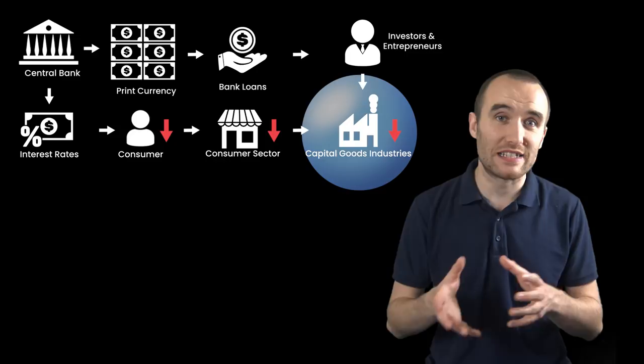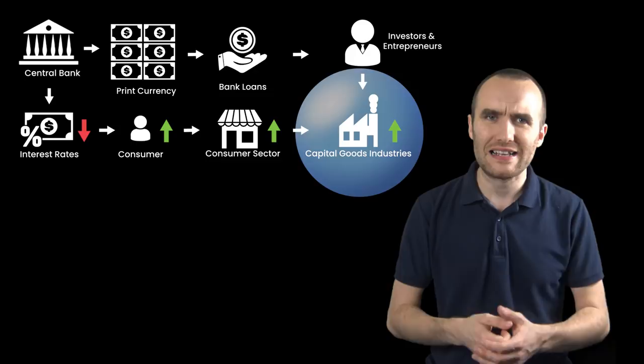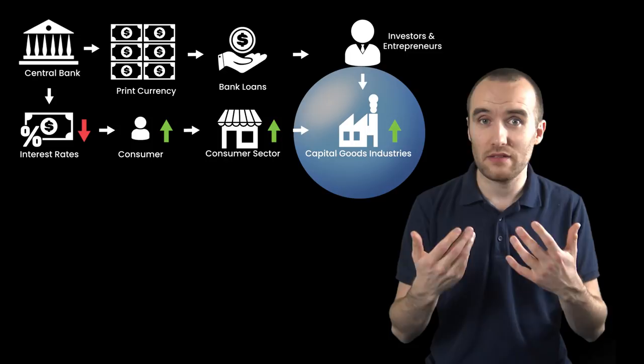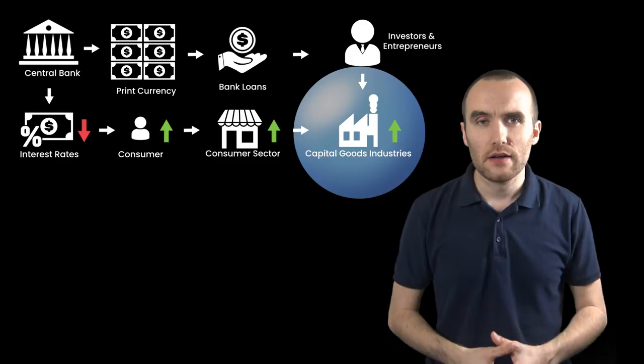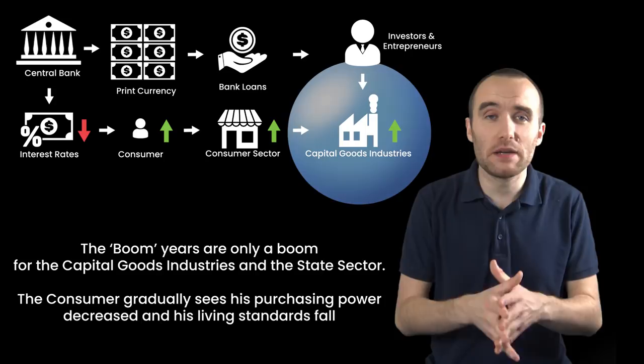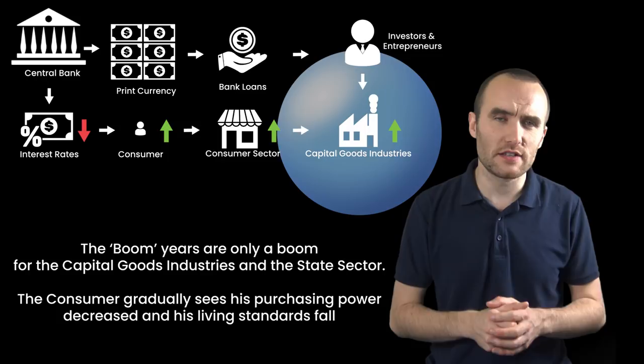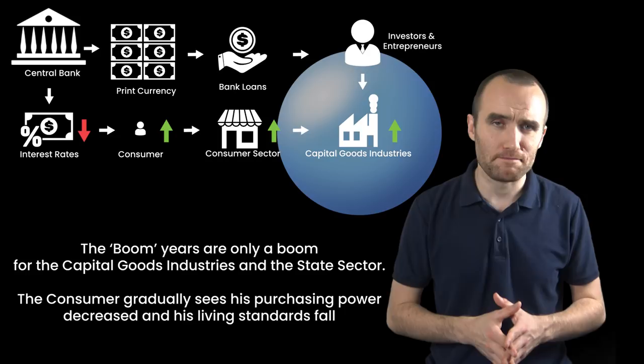And the same thing happens over and over. The consumer stops spending, the capital goods industries get into trouble, the state and the banks bail them out. But over time, the consumer gradually loses their purchasing power through all the debt accumulation and the fact that the capital goods industries are making things that they either don't want, or are too expensive to buy, such as housing. This is why, during the boom years, the consumer sees their living standards gradually coming down through no fault of their own, even if they lived frugally. Their purchasing power is gradually robbed from them and ends up in the hands of the state and the central banks. Yes, the boom years are bad for the consumer — the average guy on the street. And this keeps going and going, until it doesn't.